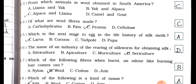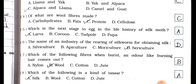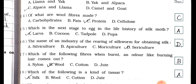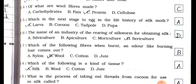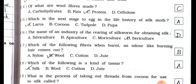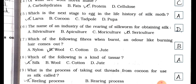Question 4: What are wool fibers made of? (a) Carbohydrates, (b) Fats, (c) Protein, (d) Cellulose. Answer is option (c) Protein. Question 5: Which is the next stage after egg in the life history of silk moth? (a) Larva, (b) Cocoon, (c) Tadpole, (d) Pupa. Answer is option (a) Larva.